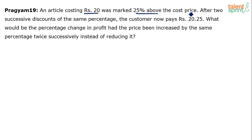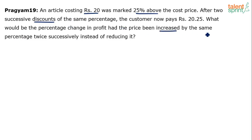In the real case, the price has been reduced — discount means reduction in price. There were two successive reductions, by which the customer pays Rs.20.25 and the shopkeeper makes some profit. But if the price was increased by the same percentage twice successively instead of reducing it, what will be the percentage change in profit?